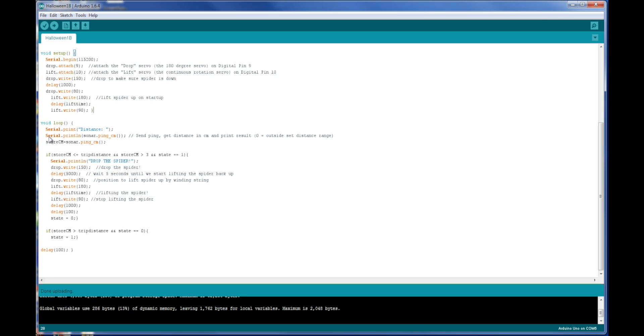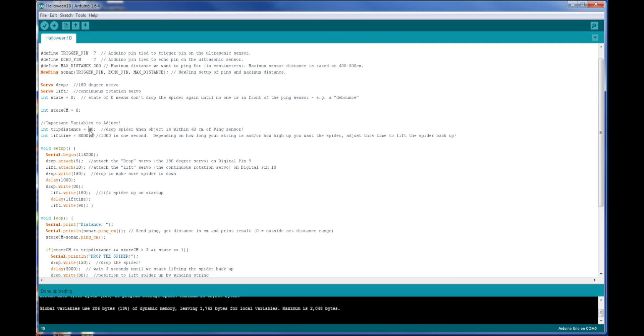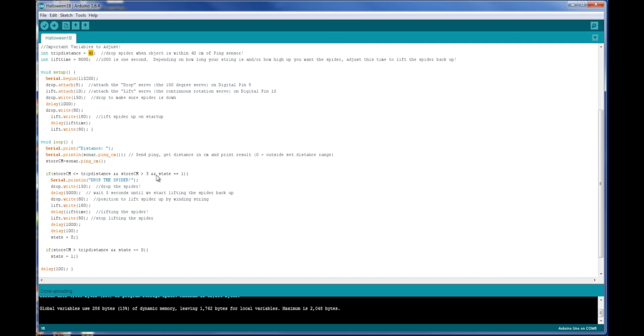And then the code is incredibly simple. All we do is this line right here, which sends a ping out and gets that distance back in centimeters. We set that as a variable here, and then we just measure if that distance is less than our trip distance, again that's the number we set right here, then go ahead and drop the spider. Now we have two more conditions in this if statement, and those are really important. One is that we make sure the distance is greater than three centimeters, and here's why. These ping sensors aren't perfect, and when they don't get a distance, they output zero. And that's going to happen a lot, and you don't want it to drop it on zero.